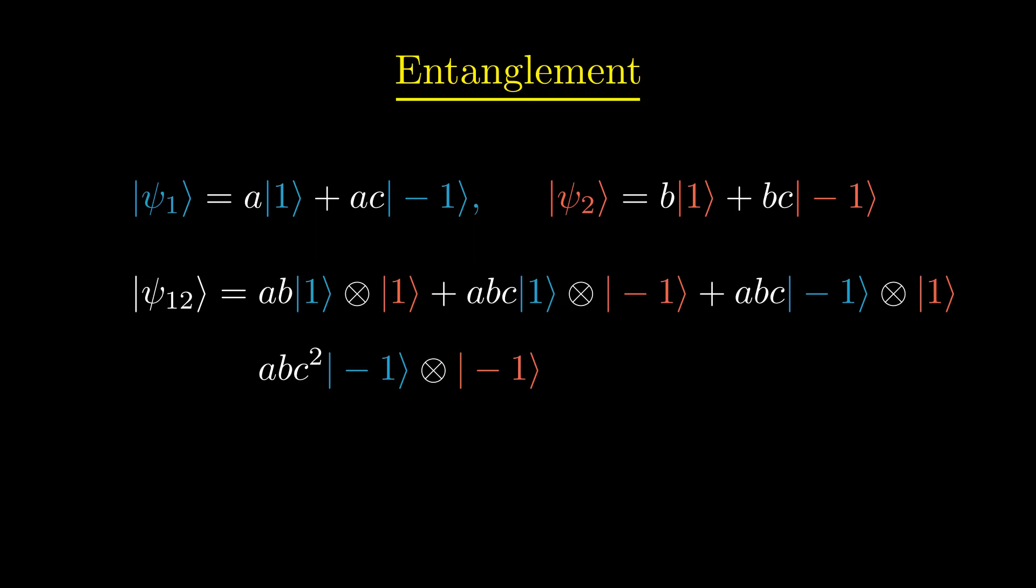I chose our original states such that their product is immediately symmetric under exchanging particles 1 and 2, and we can see this mathematically by observing that the two cross terms both have the same factor abc in front. This means we don't have to go through the process of symmetrization anymore,